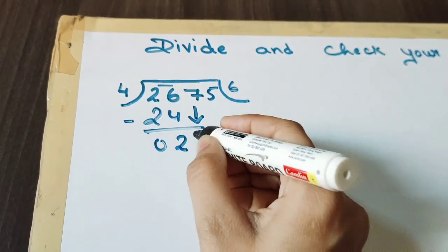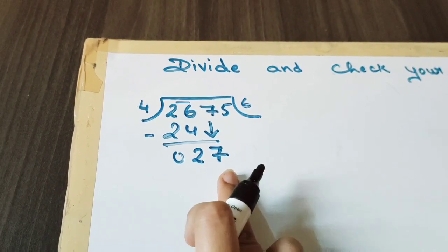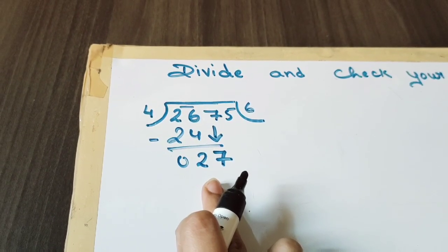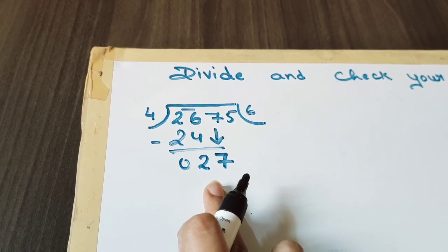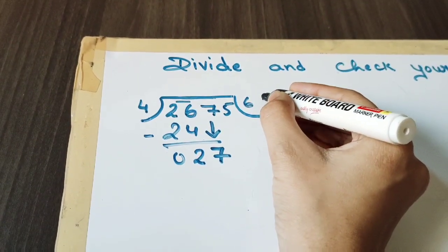Now we will write the another number here, we will copy down. Now we have to divide 27 by 4. So 4 times 6 is 24 and 4 times 7 is 28, so for 27 we have to take it again 6 times, that is 24.